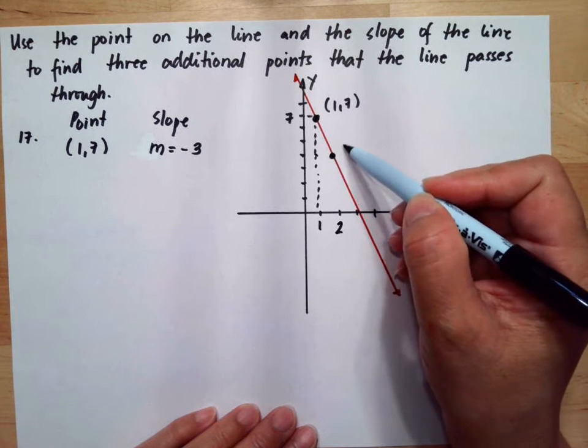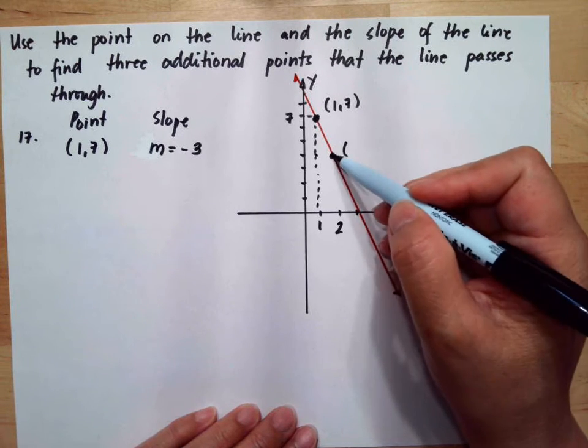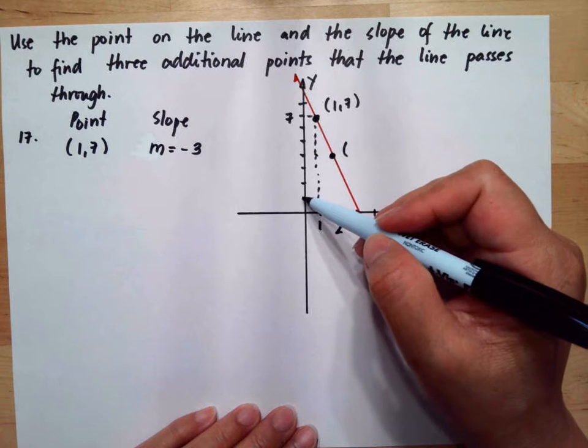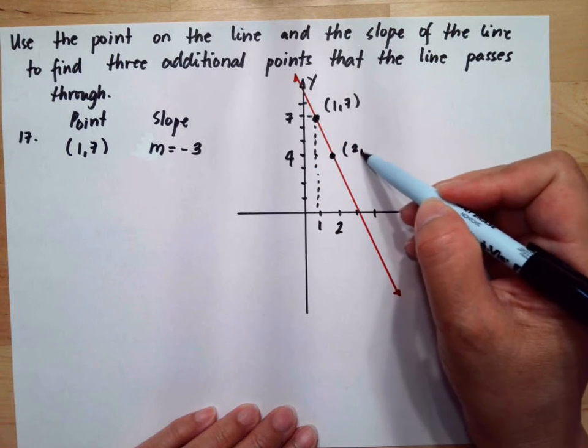If this point is 2, so we have 1, 2, 3, 4, that's 2 and 4.